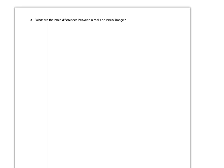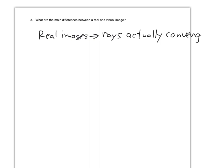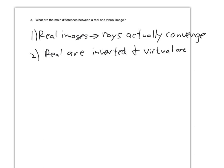The next one is just a conceptual question: what is the main difference between a real and a virtual image? The biggest difference is that for real images, the rays actually converge, and they do not for a virtual image. The other difference is that real images are inverted, and virtual images are upright.